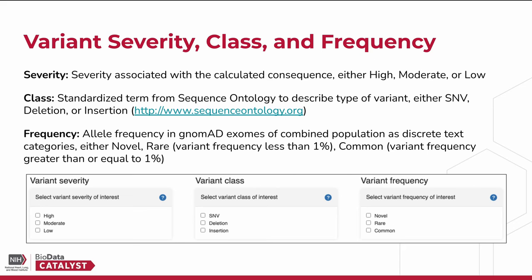The next three sections are Variant Severity, Variant Class, and Variant Frequency. Variant Severity refers to the severity associated with the variant consequence calculated. High severity variants include frameshift, splice disrupting, and truncating variants. Moderate severity variants include non-frameshift insertions or deletions and variants that alter the protein sequence without altering the length. Low severity variants include other coding sequence variants. Variant Class refers to the type of variant as defined by standardized terms from sequence ontology, including single nucleotide variants, multiple nucleotide variants, deletions, and insertions.